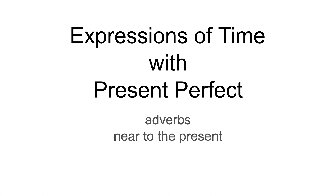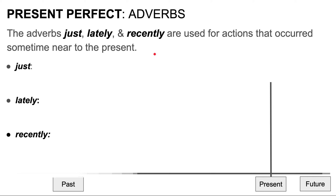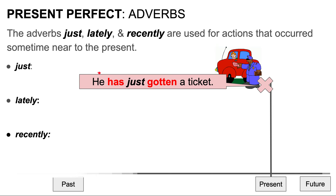Now we're going to look at adverbs that denote actions that occur in the past but near the present. The adverbs just, lately, and recently are used for actions that occurred sometime in the past but near to the present. For example, he has just gotten a ticket. Please note that just occurs very, very near the present.